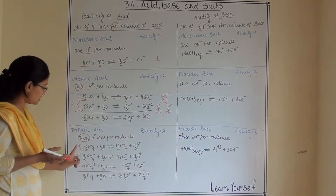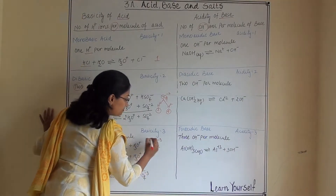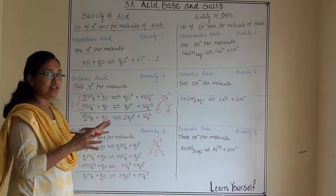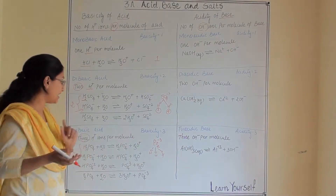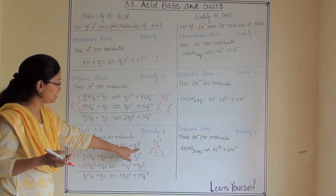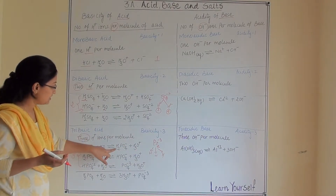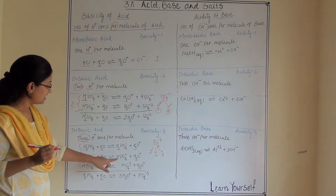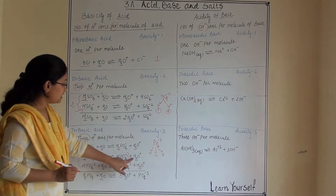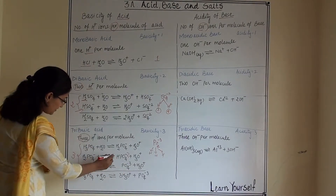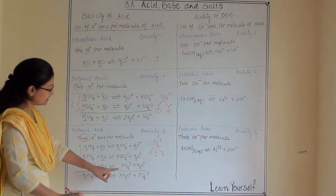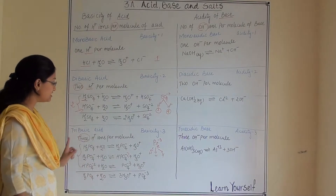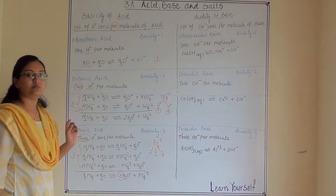Now let us see the dissociation steps of H3PO4. PO4³- (phosphate) has a combining capacity of three, so it combines with three H+. In the first step, H3PO4 dissociates and the first H+ is removed, leaving H2PO4-. In the second step, H2PO4- combines with water and gives H3O+ and HPO4²-. Then HPO4²- combines with water and gives PO4³- and hydronium ion. One by one, each hydrogen is replaced, and complete dissociation happens in three steps, giving three hydronium ions at the end.